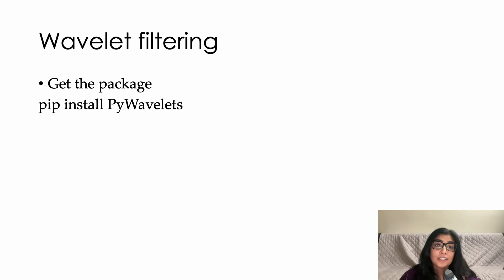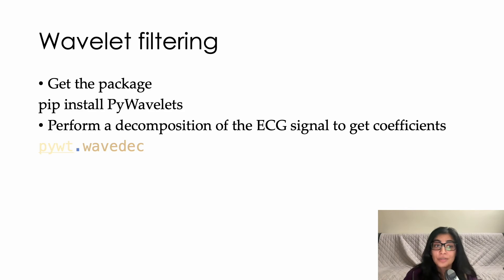So for wavelet filtering, we'll really just start with a very quick pip install of the package of interest and perform a decomposition of that ECG signal to get its coefficients. And this is a very traditional step if you're not from the signal processing world to do the processing on the decomposed coefficients. So wavedec is that method that allows us to do that.